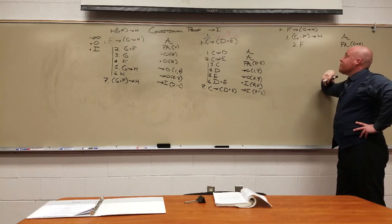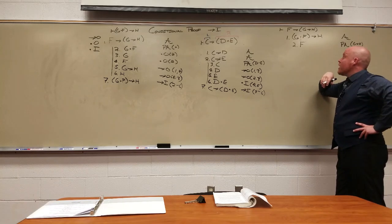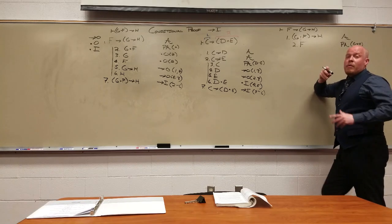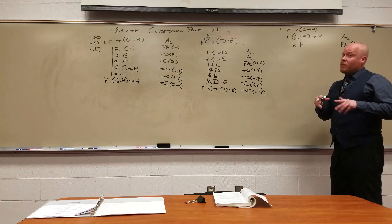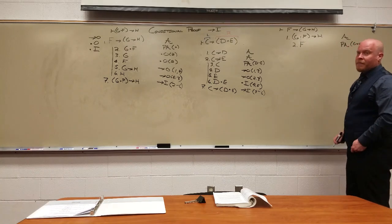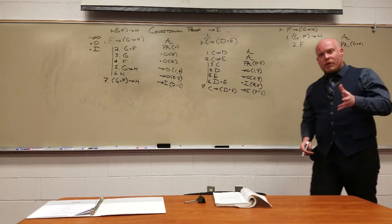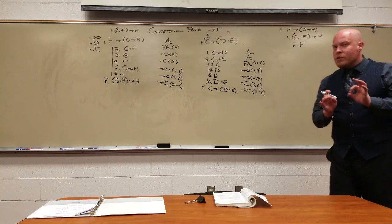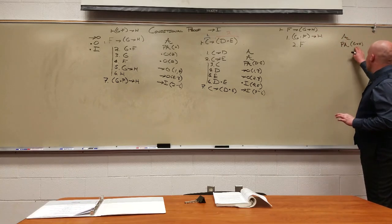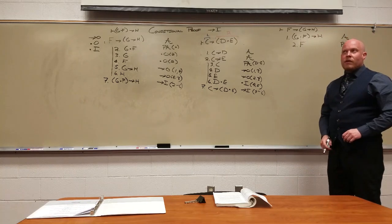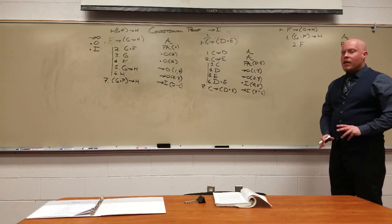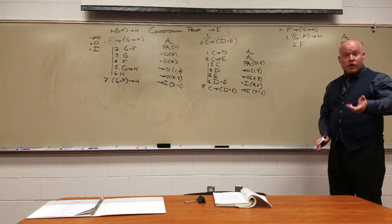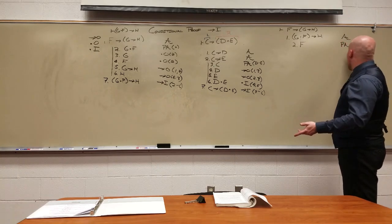We're going to provisionally assume F. And what are we trying to get? We're trying to get G arrow H. We get that, we're good. And here's the problem. Now, look at this now. Can we do an arrow out? No. Can we do an and out? Still no. Can we do an and in? We could, but let's not. Because that's not going to get us anywhere. Now we're stuck again. So what do we do in this particular case? We look and see, wait a minute. What am I trying to get right now? What's my goal right now? My goal right now is G arrow H. Is my goal an arrow? Yes.